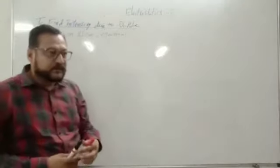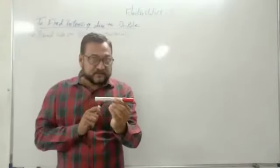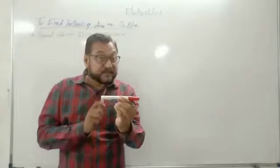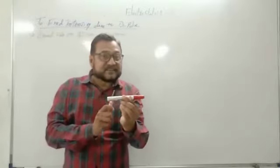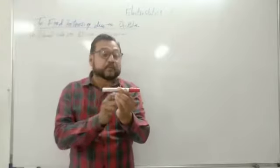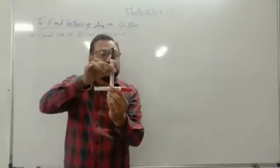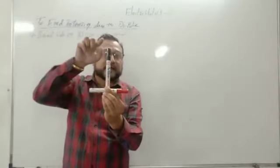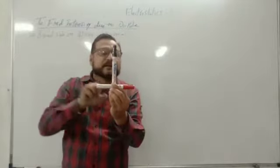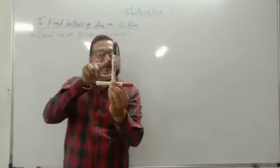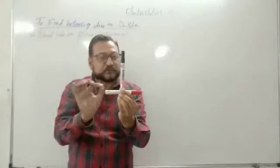What do you mean by equatorial? Equatorial means if it is a dipole with positive and negative charge, we find the intensity at a place which has equal distance from both the poles.